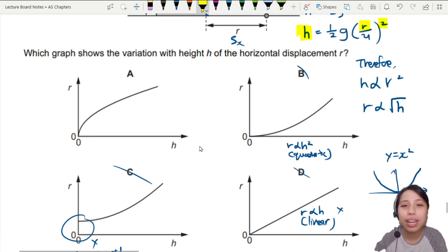So that only leaves us with the last one that satisfies this relationship, which is a square root graph. R proportional to square root of H. I would call this a square root graph. So best choice here is going to be A.